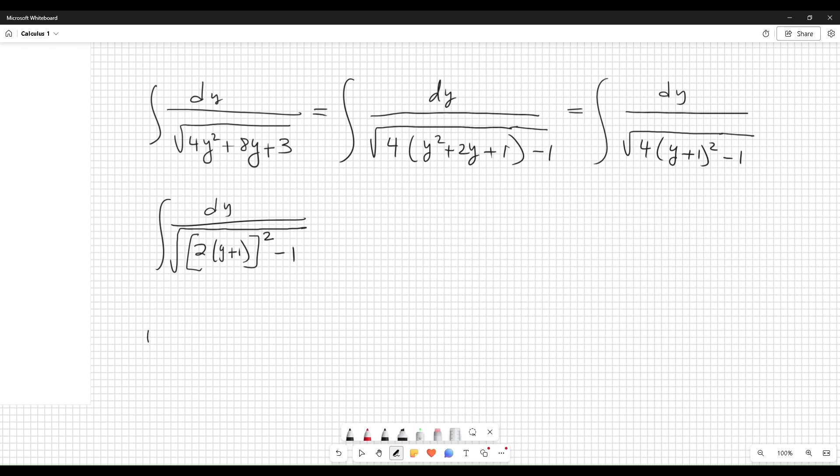Here, if you call u equal to 2y plus 1, then du would be 2dy. You have one-half - you need 2 here to complete the differential and one-half here. So one-half integral of du over square root of u squared minus 1.